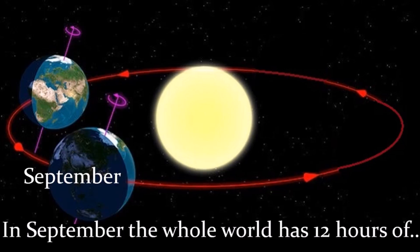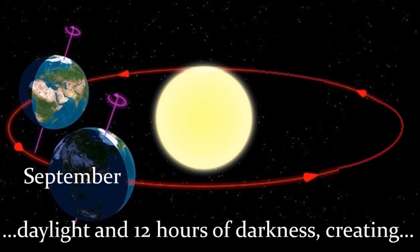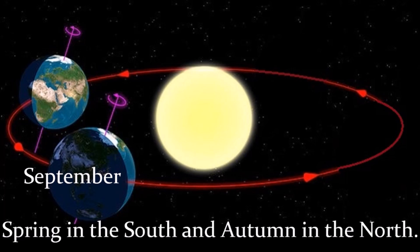In September, the whole world has 12 hours of daylight and 12 hours of darkness, creating spring in the south and autumn in the north.